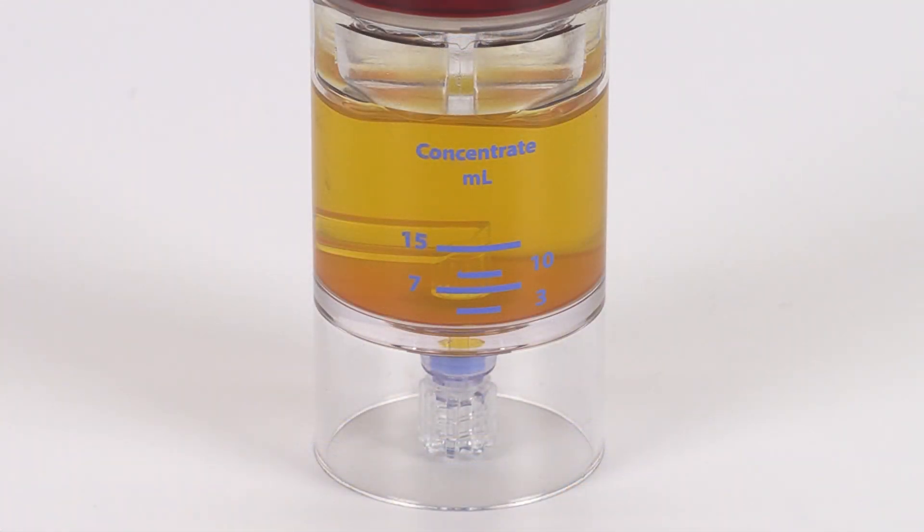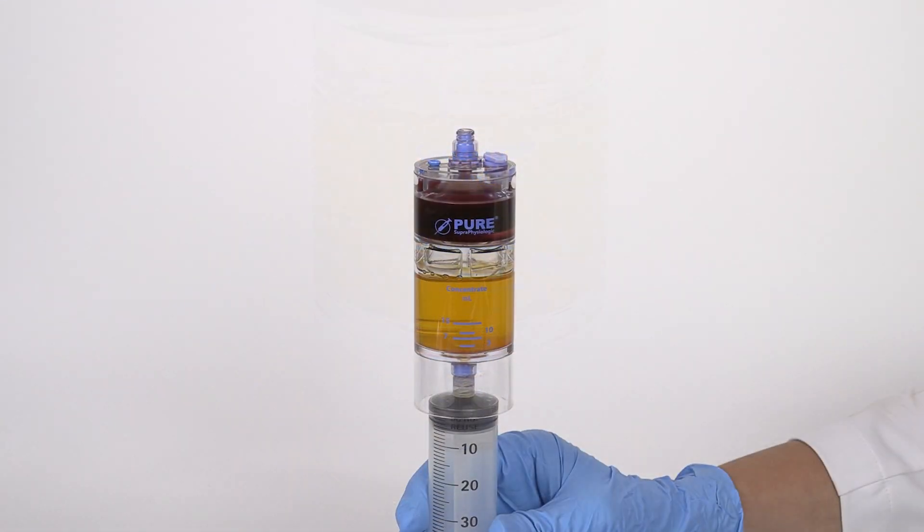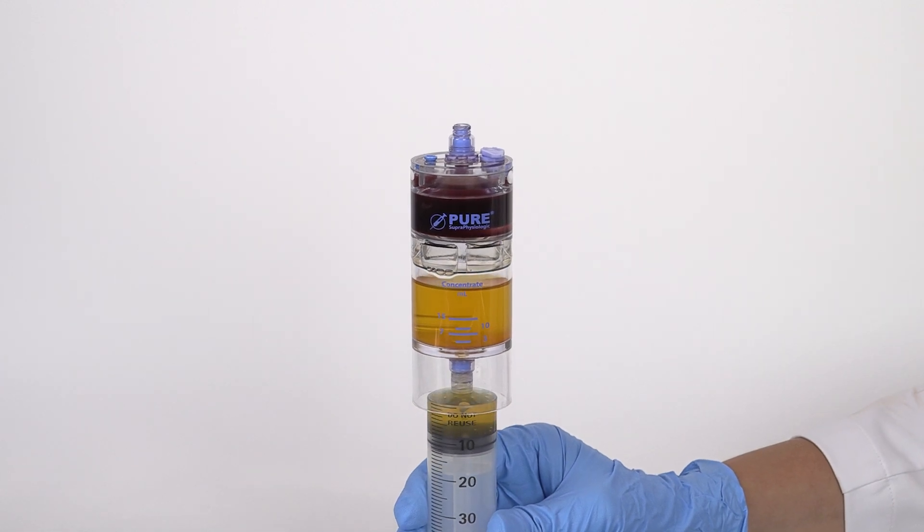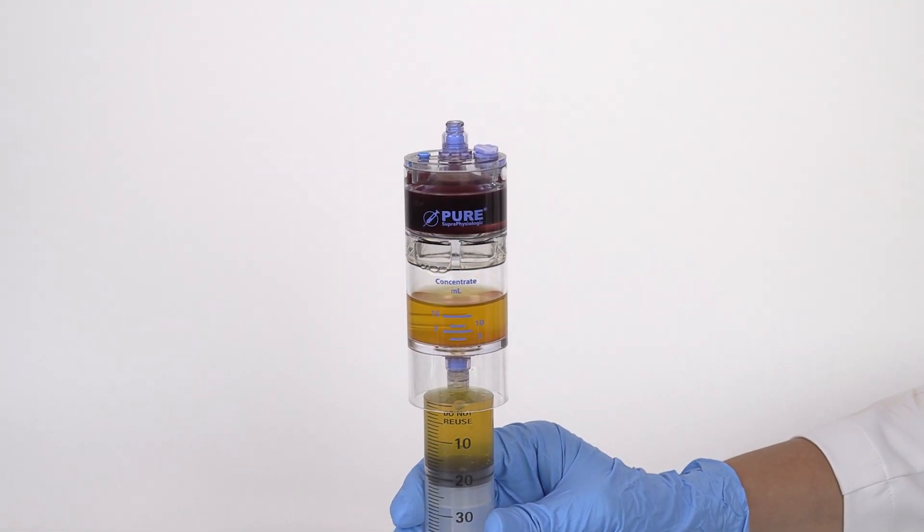After centrifugation, the supra physiologic platelet buffy coat layer will be clearly visible at the bottom of the device. Remove the clear non-vented cap from the bottom port and attach a sterile syringe.